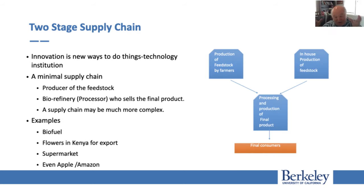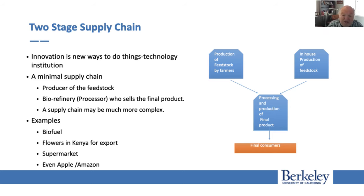To understand the concept, we have a very simple two-stage supply chain. This supply chain includes two elements: input production — or what we call feedstock production — which can be done either by farmers or within a company, and processing. A company that owns the supply chain can either buy from others such as farmers, or produce it themselves through vertical integration. So the supply chain includes producers of feedstock, a biorefinery that refines it, and then you sell it.